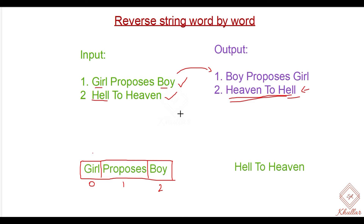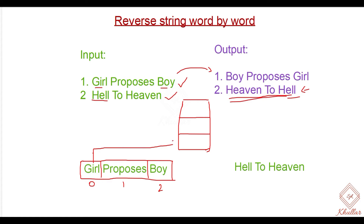In other videos we will discuss other methodologies as well. Suppose we are using a stack here. A stack has a couple of methods like push and pop. We push items onto the stack and we pop items from the stack. It is nothing but last-in first-out methodology. So if we push 'girl' first, it comes at the bottom. Then we push the next item 'proposes', and the third item 'boy' comes on top because it is the last item.